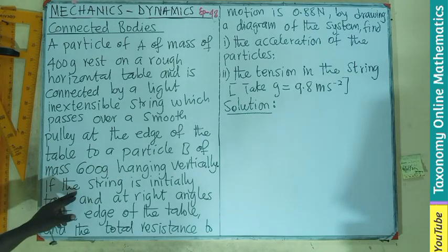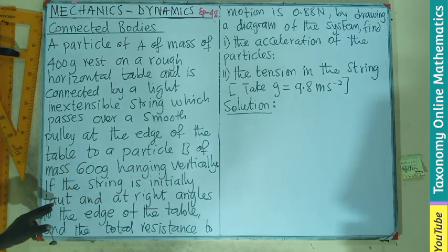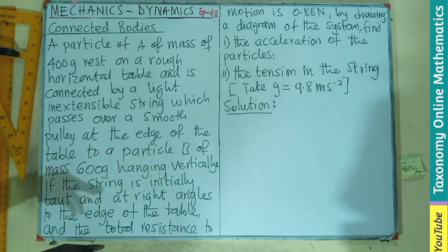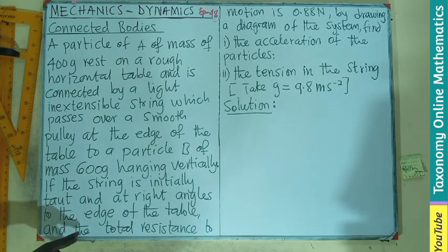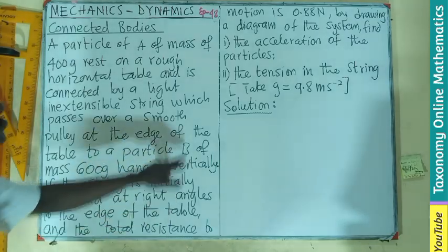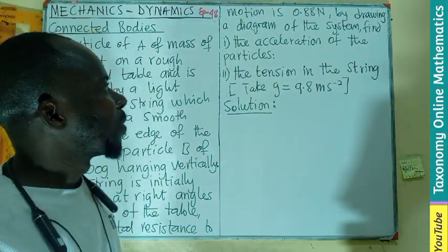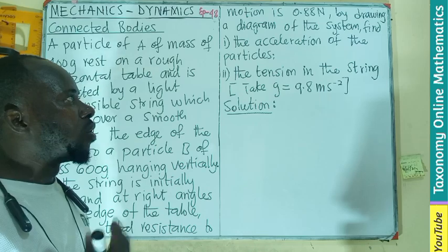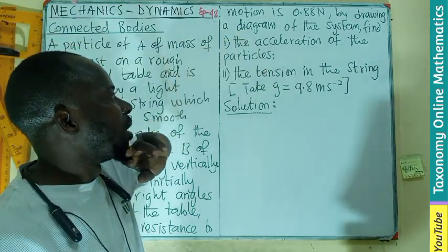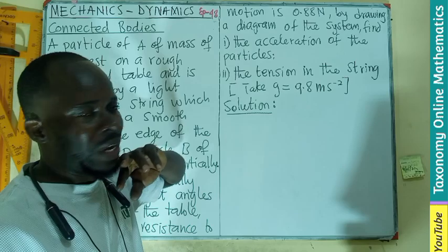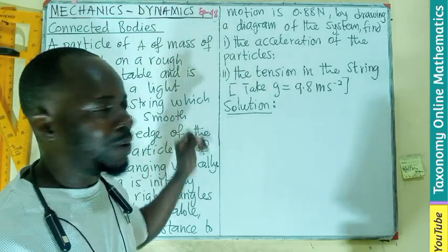to a particle B of mass 600 grams hanging vertically. If the string is initially taut, meaning stretched, and at a right angle to the edge of the table, and the total resistance to the motion is 0.88 newtons.